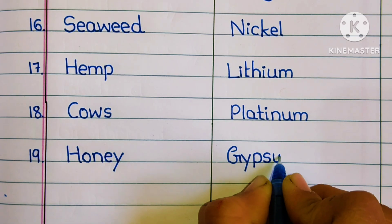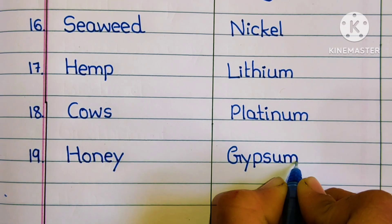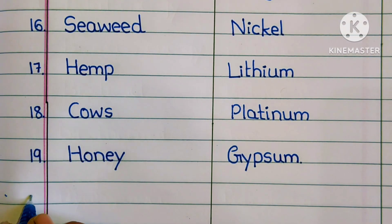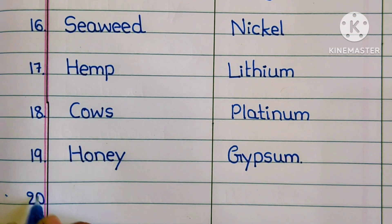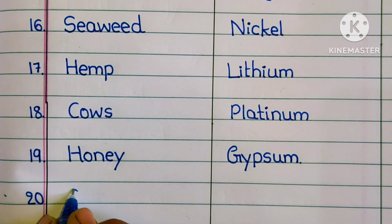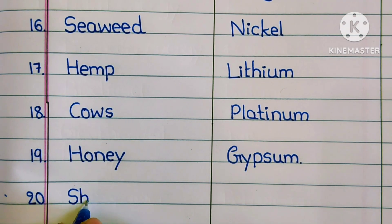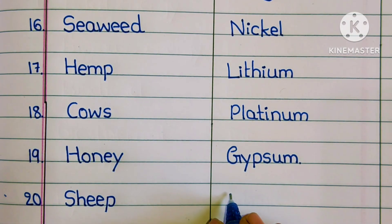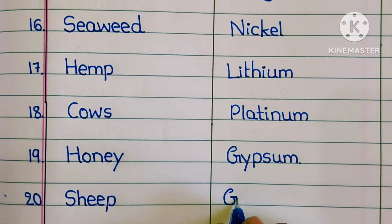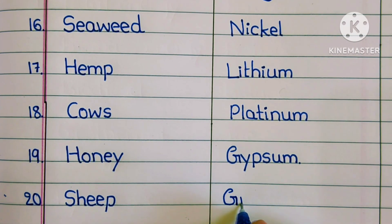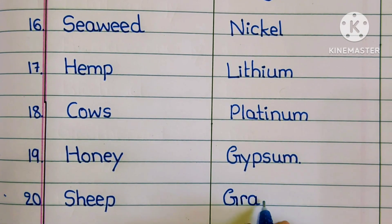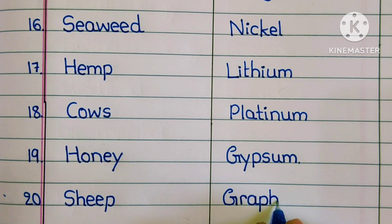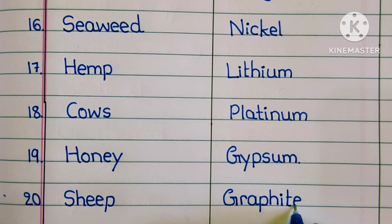Nineteenth one: honey is renewable and gypsum is non-renewable. Twentieth one: renewable resource is sheep and non-renewable resource is graphite.